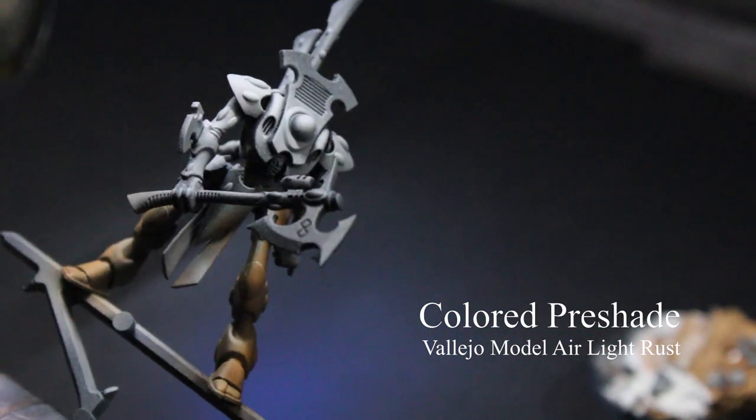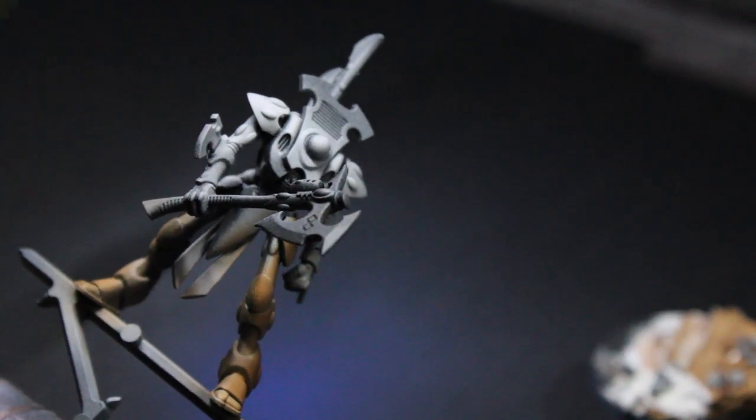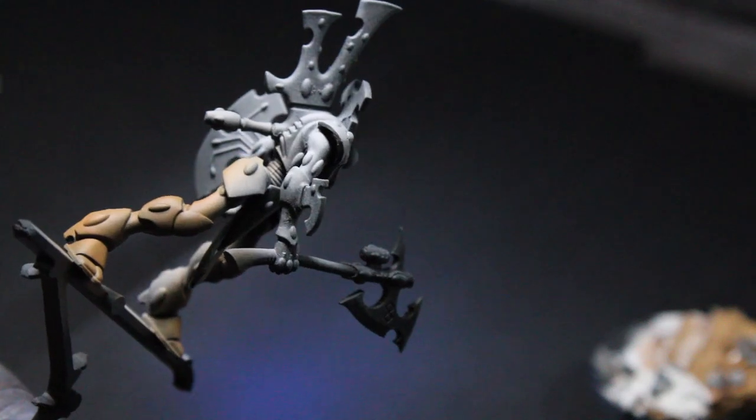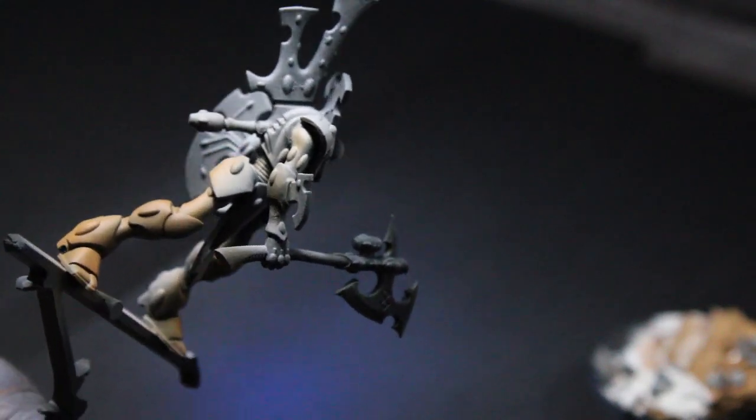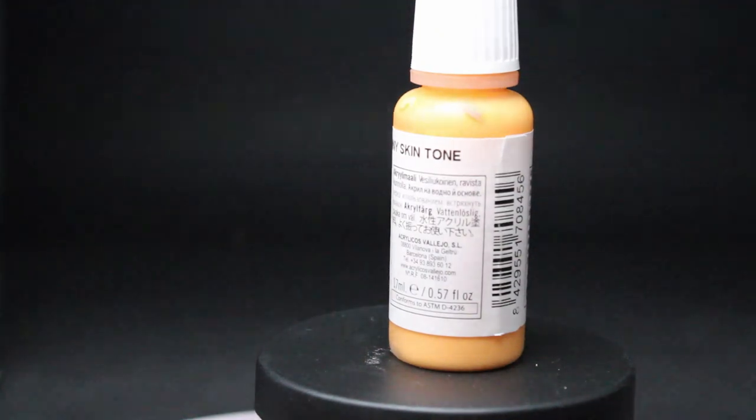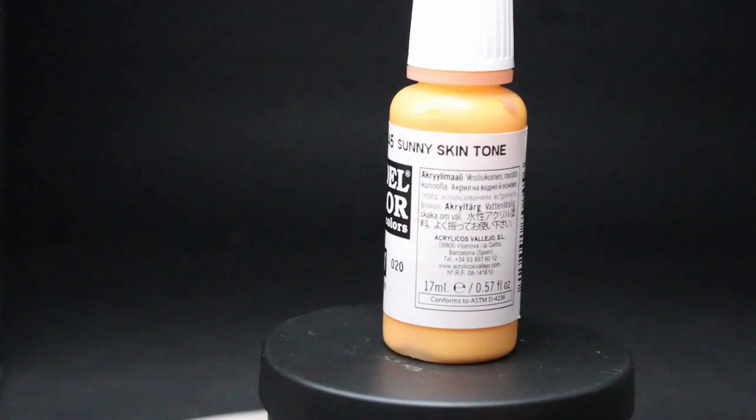We will now begin preparing the undertones for the yellow armor by applying Vallejo Model Air Light Rust over the primed surface at approximately 20 pounds per square inch.